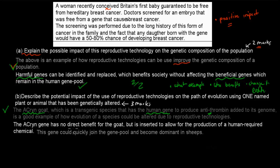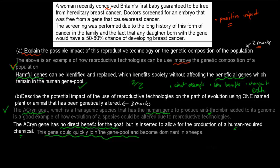The ACRYN gene has no direct benefit for the goat — this gene does not give the goat any survival advantage. It's inserted to allow for the production of a human-required chemical, so it's definitely not going to give it any evolutionary advantage. It might not give it a disadvantage, but it's not going to give it an advantage. This gene could quickly join the gene pool and become dominant in the sheep because we are selecting for it — it could take over and eventually become quite common in the gene pool.